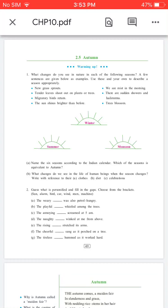New grass sprouts. Tender leaves shoot out on plants and trees. Migratory birds return. The sun shines brighter than before.